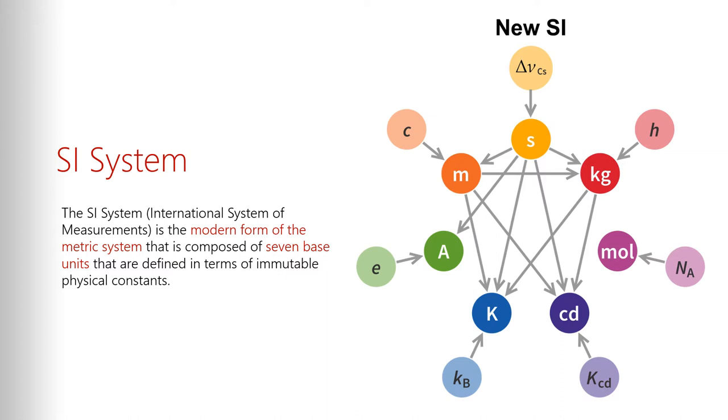So these are the seven immutable units of the SI system, and they are linked to constants of reality. Now this has not always been true, used to be that these were like the standard English system, based on some weird archaic standard value. Back in the day, the foot used to be defined as the length of the monarch's foot, but nowadays they are defined by immutable values.